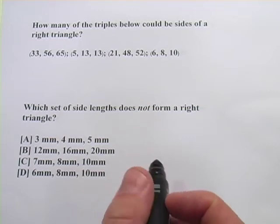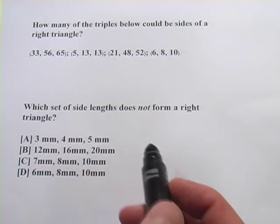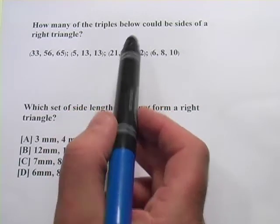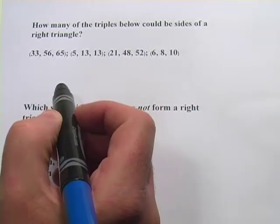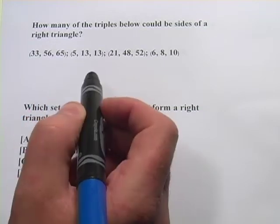Here are a couple of problems that have to do with right triangles. The first one says, how many of the triples below could be sides of a right triangle and have sets of three numbers? So could these be sides of a right triangle?